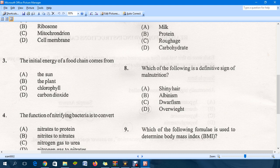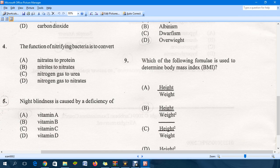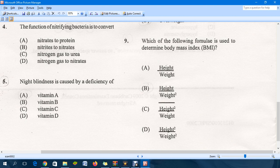Question nine: Which of the following formula is used to determine BMI, that is body mass index? The correct answer is B, which is height divided by weight squared.